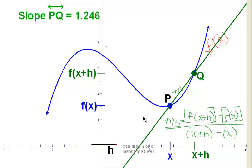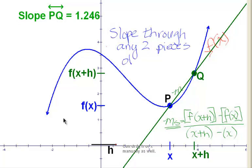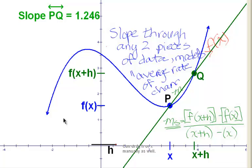Why do we care about the slope of a line through two points? Because the slope of a line through any two pieces of data, and points are pieces of data, inputs and outputs, models average rate of change.